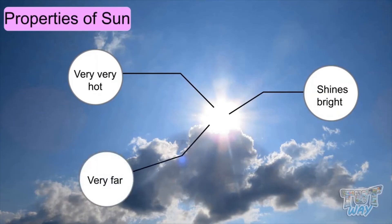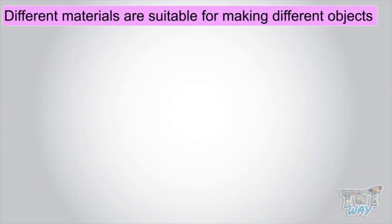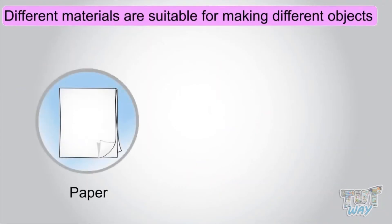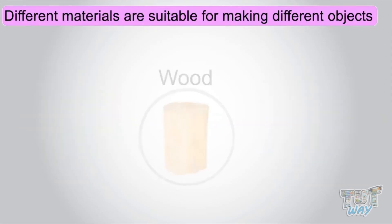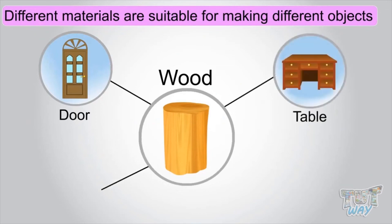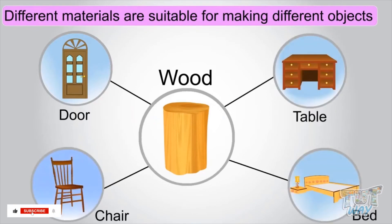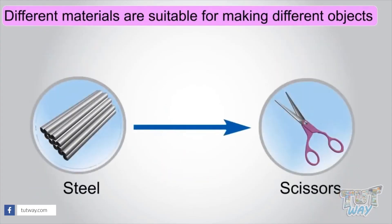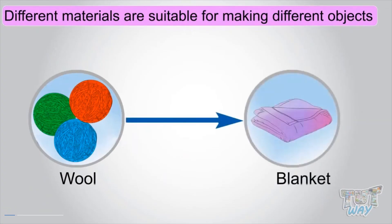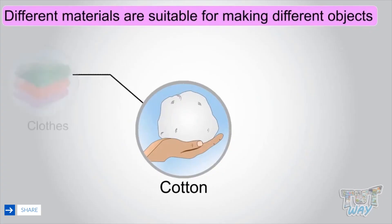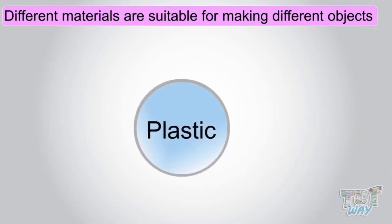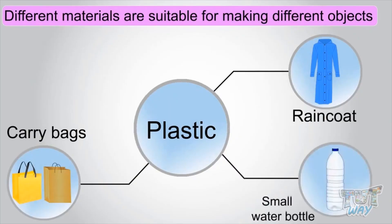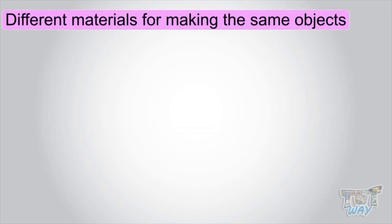So we learned examples of some objects and their properties. Different materials are suitable for making different objects. Like, paper is suitable for making notebooks to write. Glass is suitable for making window panes. Wood is suitable for making doors, tables, chairs, and other furniture. Steel is suitable for making scissors. Wool is suitable for making blankets. Cotton is suitable for making clothes and bed sheets. Plastic is suitable for making raincoats, carry bags, and small water bottles.